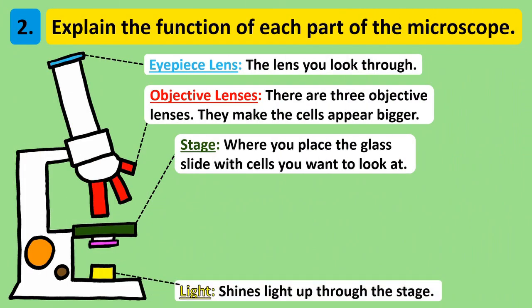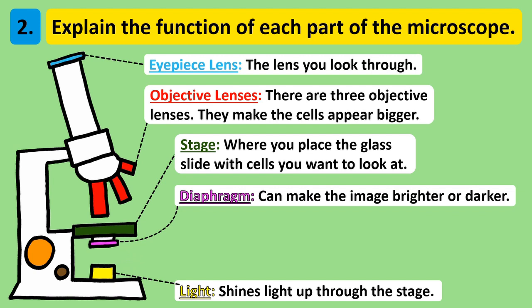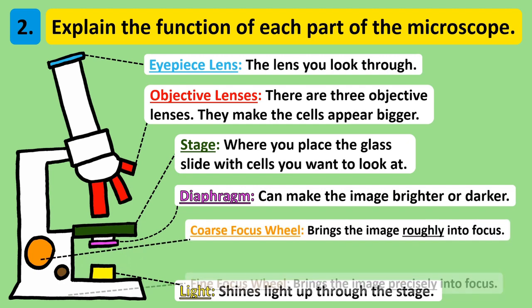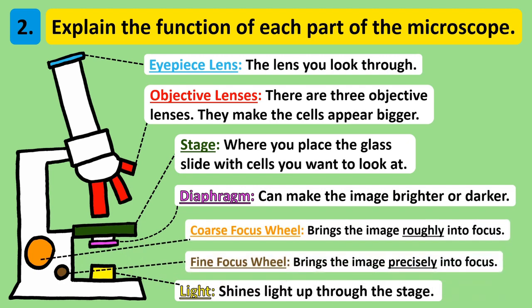At the bottom of the microscope is the light, and this shines light up through the stage to allow us to actually see the cells. The diaphragm can then control the amount of light that reaches the cells, and we can adjust the diaphragm to make the image we see brighter or darker. The coarse and fine focus wheels move the stage up and down, and doing this helps to make the cells look more clear and less blurry.